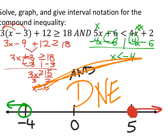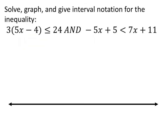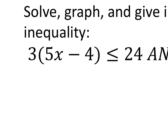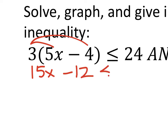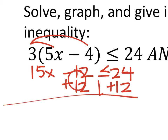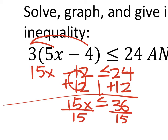If this were an 'or' statement it would completely change things — we could write the interval. But it's not, so we're stuck with no solution. Let's look at the next one. Distribute the three: 15x - 12 ≤ 24. Add 12 to both sides: 15x ≤ 36. Divide by 15 and simplify by three: x ≤ 12/5.